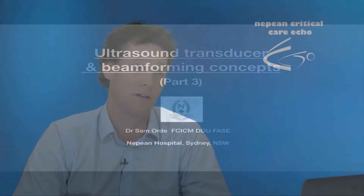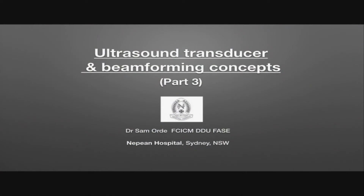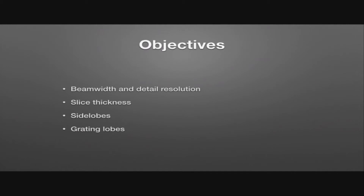This is the third and final lecture about ultrasound transducers and beam forming concepts. In this lecture, we'll be talking about some of the limitations of beam forming and some of the related artifacts that we can get from this. So we'll be talking about beam width and detail resolution, slice thickness, side lobes and grating lobes.